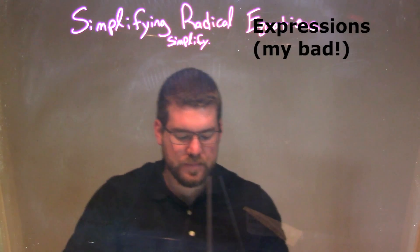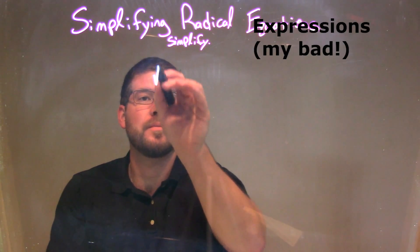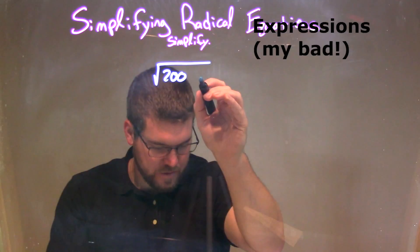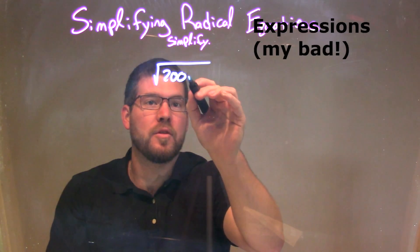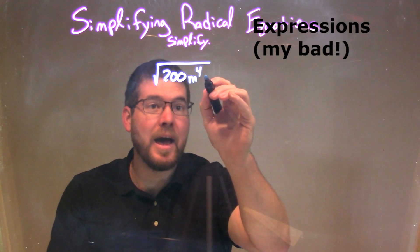So if I was given this problem: the square root of 200, m to the fourth power, times n.